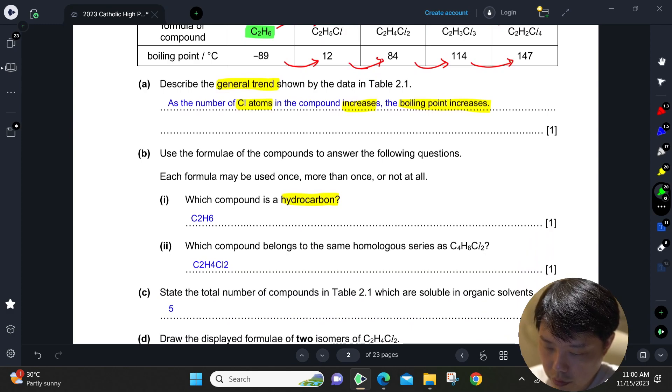Which compound belongs to the same homologous series as C4H8Cl2? Homologous series means the same functional group, having two chlorine, so it will be C2H4Cl2. Same homologous series.